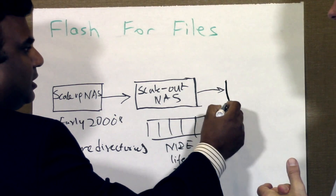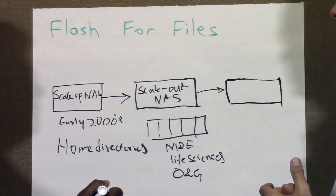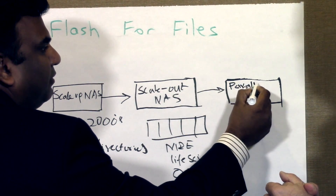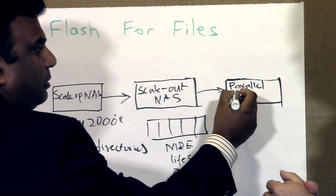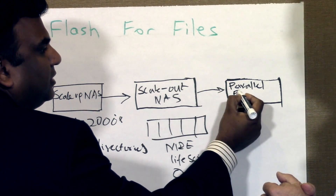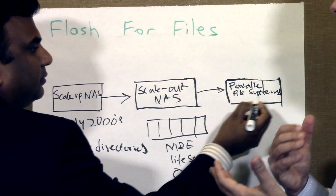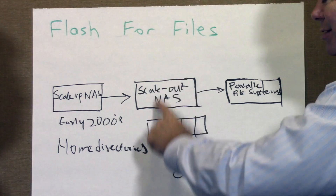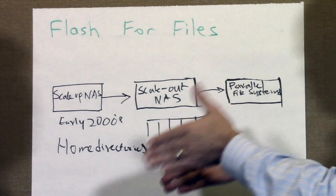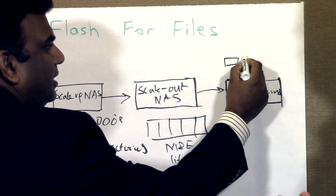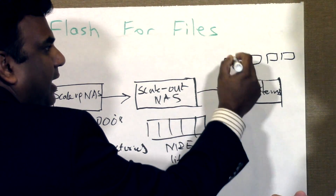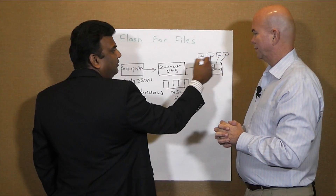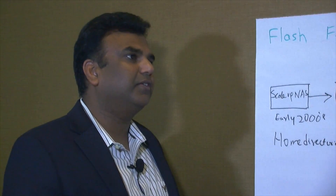One of the problems with scale-out NAS is it's limited by the protocols — it typically uses NFS or SMB to access the data. There is a technology very popular in the high-performance computing industry, not so much in commercial enterprise, but suddenly becoming a necessity: parallel file systems. With NFS or SMB it's really a single-threaded, point-to-point protocol. With a parallel file system, the parallel nature is also on the client side — there's a parallel file system client on every one of these boxes, and every client can read and write to the same file simultaneously.